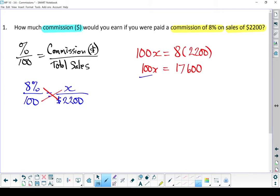Divide both sides by 100 and your commission ends up being $176. And that is what you would earn.